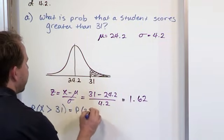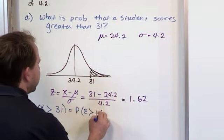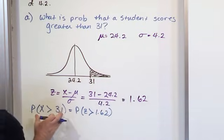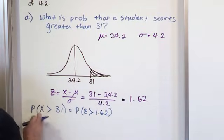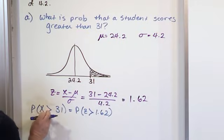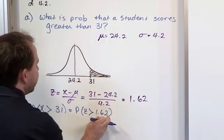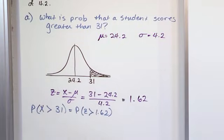Which is exactly the same thing as saying, hey, what's the probability of a z-score off that table being greater than 1.62? This is how we translate it from the real world, where we're talking about a randomly drawn student or random variable being greater than 31, which is our test score. We translate it into a problem involving z-scores.